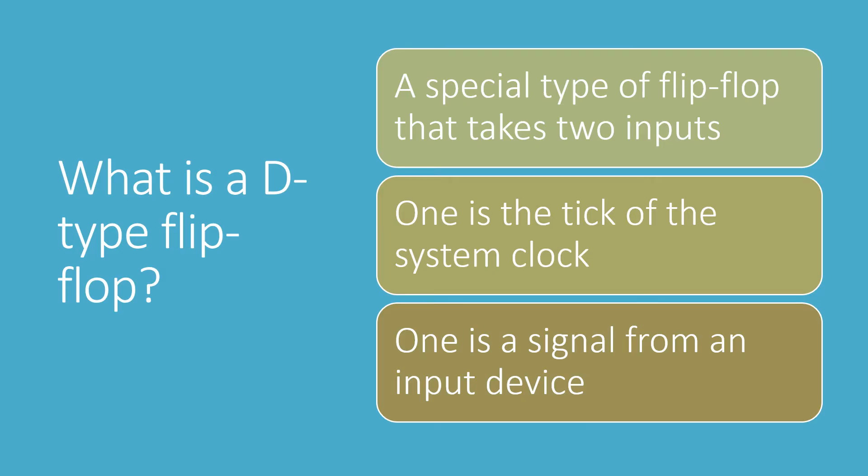Now a D-type flip-flop is slightly different. It takes two inputs and produces an output. One of the inputs is the tick of the system clock and the other is a signal from any kind of input device. For example, a temperature sensor.